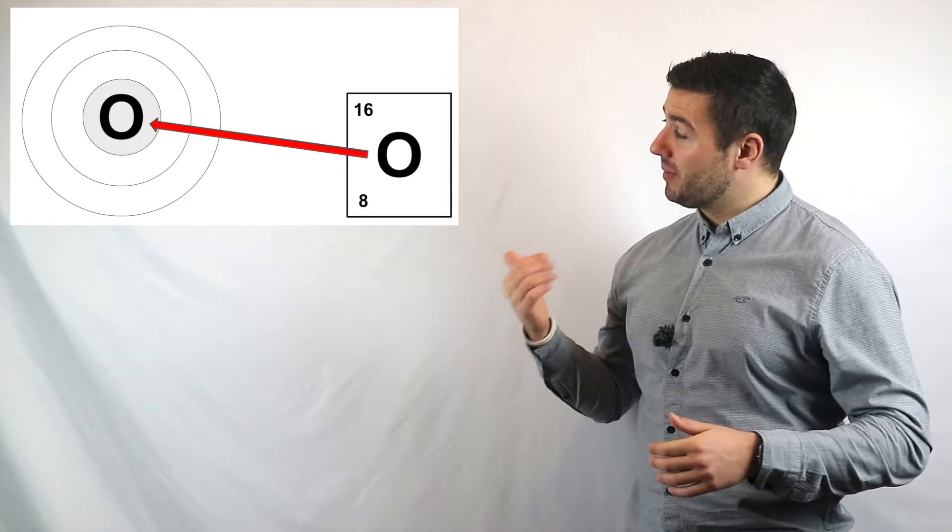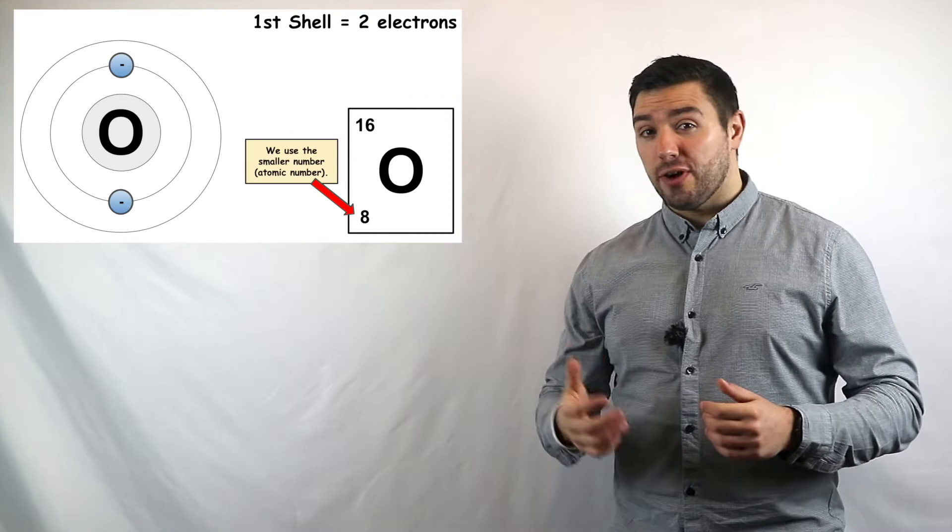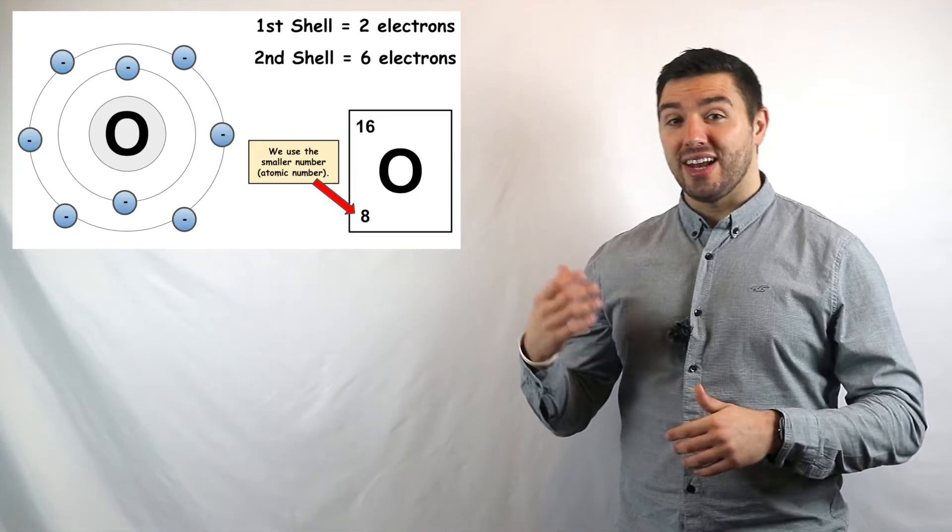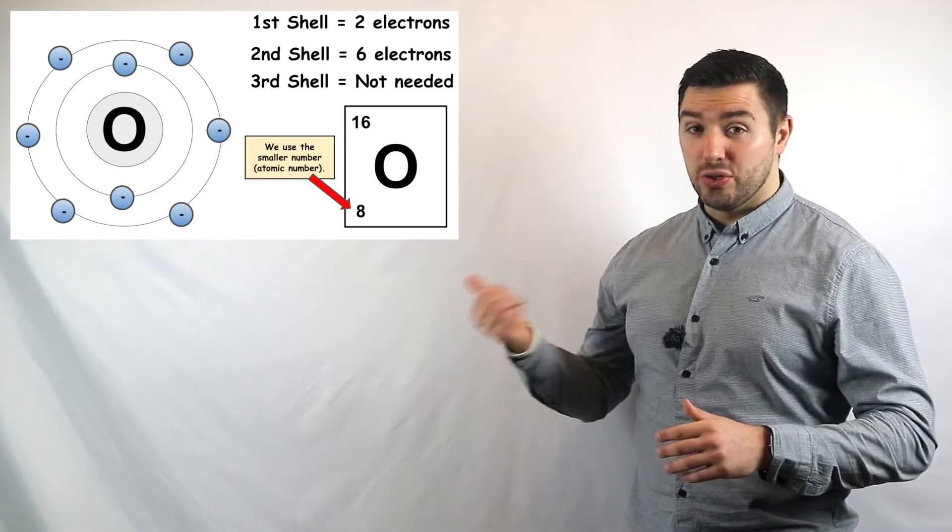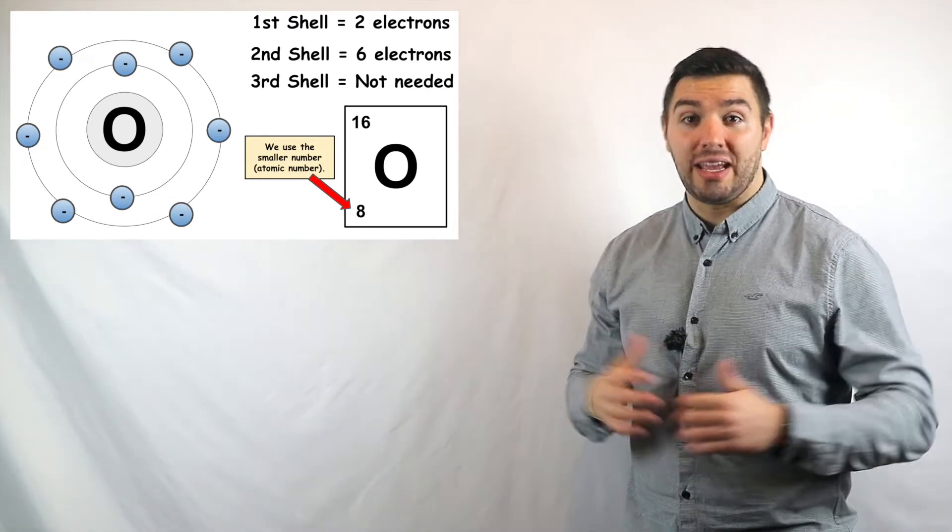Okay, we start by putting the symbol in the middle of the nucleus. So that's the O. Then on the first shell, we can put two electrons in. And then in the second shell, we're going to put six. Reason being, oxygen only has eight electrons. So two in the first and six in the second makes eight. So that's nice and straightforward.